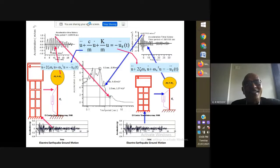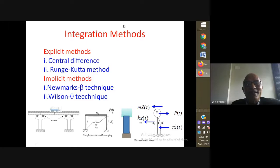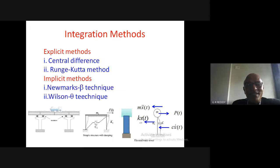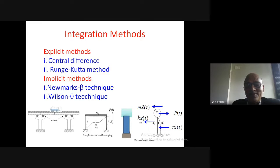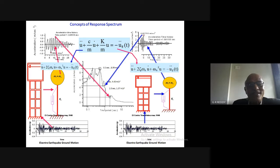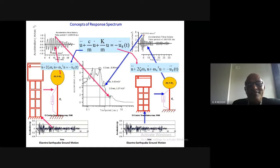You have the equation of motion with known forces and different integration schemes — generally implicit methods are used. Regarding the response spectrum: it is nothing but the maximum response of a single degree of freedom system of a given natural frequency subjected to a given ground motion. When the maximum response for that frequency is plotted, you get the response spectrum.